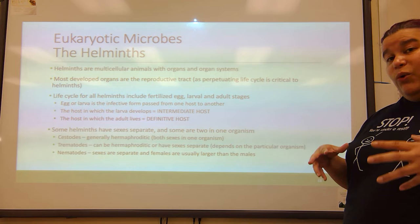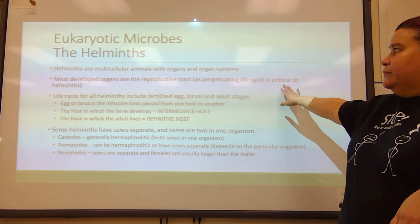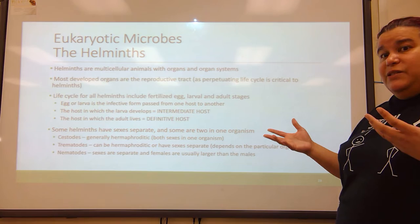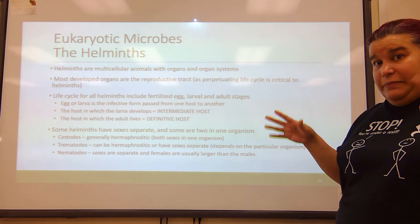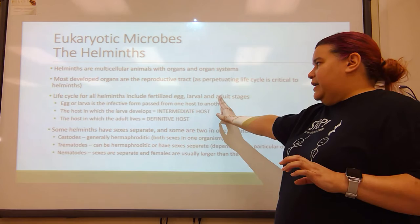Helminths are multicellular animals. They have organs and organ systems. The most developed organs are going to be the reproductive tract — why? Perpetuating the life cycle. If a species wants to live, they have to make babies. So if we're talking about the simplest organisms, their most important organ system is the reproductive system so they can spread. The life cycle for all helminths includes a fertilized egg, a larval stage, and an adult stage.